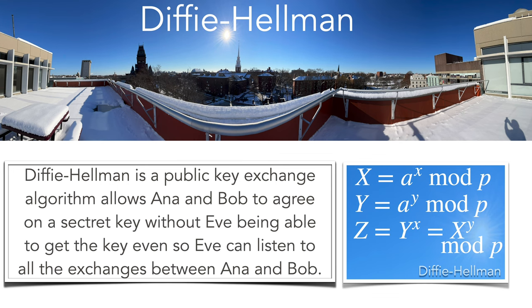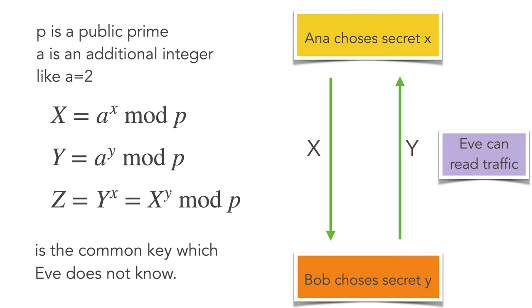Diffie-Hellman is a public key exchange procedure whose security uses elementary number theory and is based on the difficulty of computing the discrete logarithm of a number modulo a prime. A public prime and an additional number a are given. Anna chooses a secret x and computes a^x; Bob chooses a secret y and computes a^y. Their common key is z = (a^x)^y = (a^y)^x. Eve, who can listen to the transmitted values a^x and a^y, cannot figure out z — the difficulty being the discrete logarithm problem.